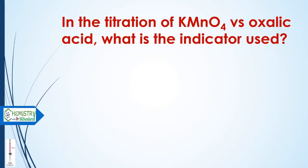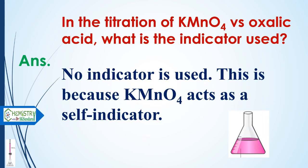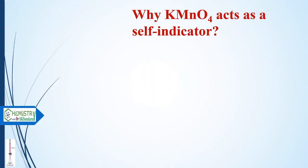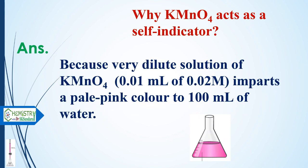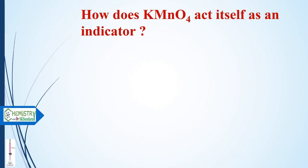The next important question is: in the titration of potassium permanganate versus oxalic acid, what indicator is used? No indicator is used here, because potassium permanganate itself acts as the indicator — no external indicator is needed. This is because even a very dilute solution of KMnO4 (0.01 mL of 0.02 molar) imparts a pale pink color to 100 mL of water.